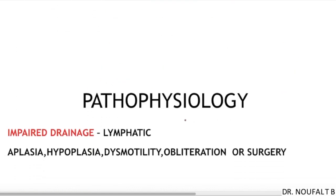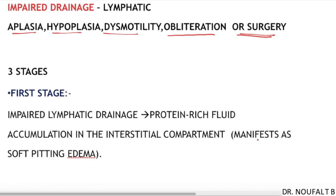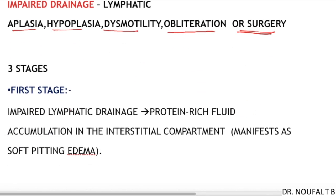Coming to the pathophysiology, impaired lymphatic drainage can be due to lymphatic aplasia, hypoplasia, dysmotility, and obliteration of lymphatics. This can also be secondary to surgery.